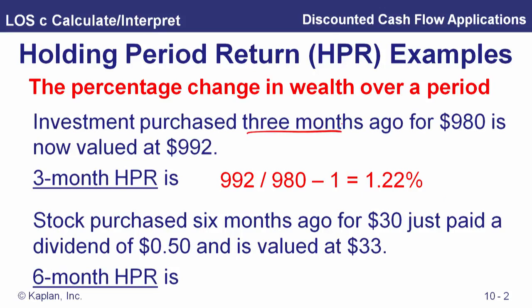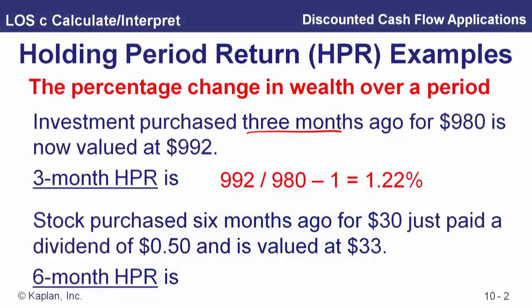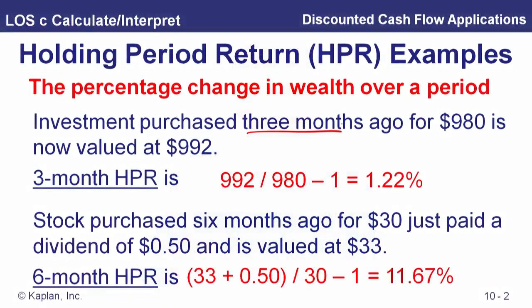In the second example, we also have a cash flow. A stock purchased six months ago for $30 just paid a dividend of $0.50 and is now valued at $30.33. Our beginning value is $30 and our ending value is $30.33 plus the $0.50 dividend. When calculating a holding period return for a bond with interest payments or a stock with dividends, we incorporate that into our measure of increase in wealth. So the six-month holding period return is ($30.33 + $0.50) divided by $30.00 minus one, which equals 11.67%.